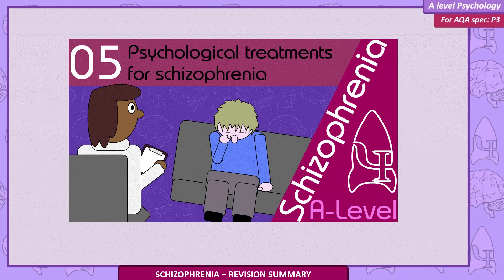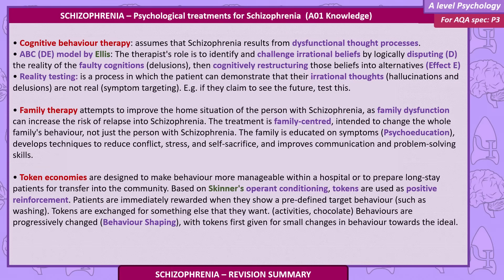Psychological treatments for schizophrenia. Cognitive Behaviour Therapy assumes that schizophrenia results from dysfunctional thought processes. Using the ABCDE model developed by Ellis, the therapist's role is to identify and challenge irrational beliefs by logically disputing the reality of the faulty cognitions — delusions — and then cognitively restructuring the beliefs into alternatives at effect E.